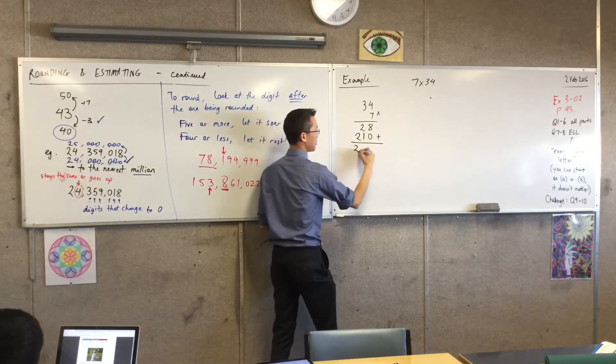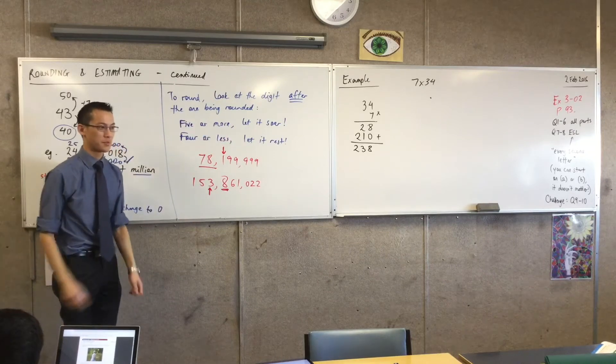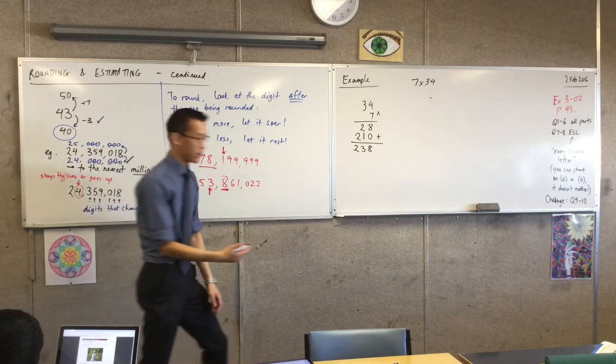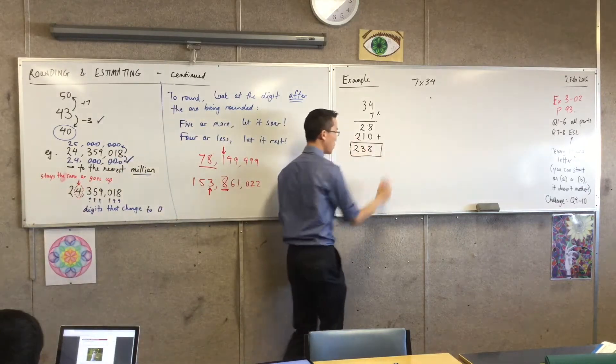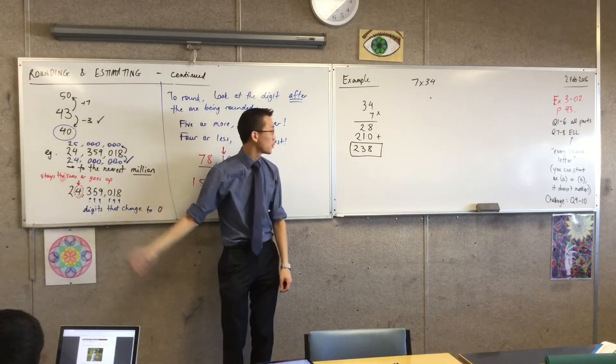I'm going to add them up, which gives me 238. I did it in the wrong side, but that's because I think I knew what the answer was. Now just before I answer any questions, there's the exact value that I'm looking for. And it wasn't too difficult, but here's where this comes in and is really useful.